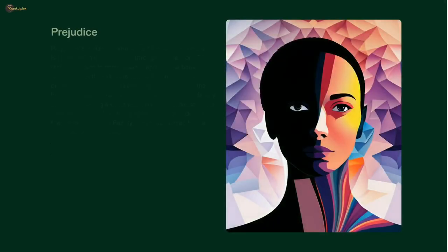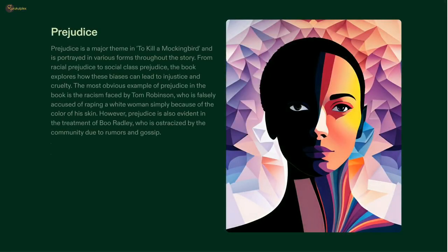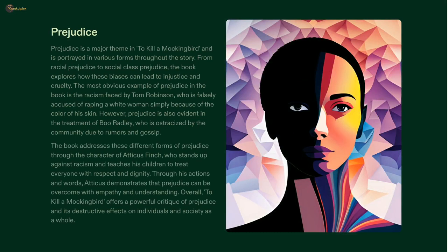Prejudice has long been known to cause immense damage to societies, with Harper Lee's To Kill a Mockingbird serving as a perfect example of the multiple forms it can take. Racism is illustrated through the false accusation of rape against Tom Robinson, while social class prejudice is depicted through the suspicion and ostracization of Boo Radley. Atticus Finch serves as a symbol of justice, teaching us to combat the effects of prejudice and show respect for all individuals. Through his model of morality, we can recognize the importance of fighting prejudice in order to build a better world.